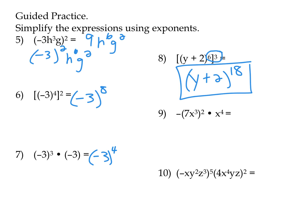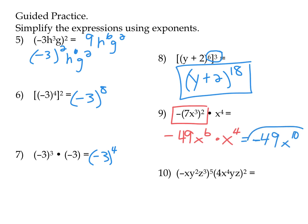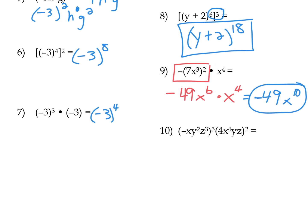In this next example, let's start by simplifying the first part. The negative doesn't change — it's not being squared. The seven is squared, giving 49x to the sixth. Seven squared is 49, and now times x to the fourth. When we multiply, we get negative 49x to the 10th, since we add the exponents of the like base x.